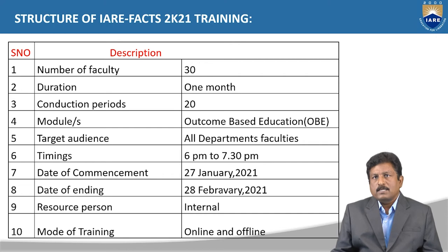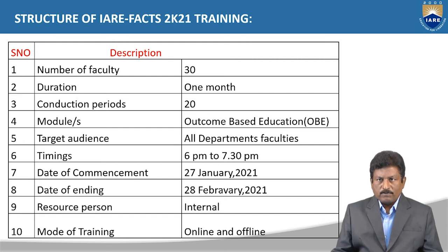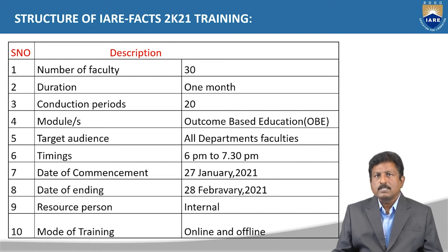Coming to the structure of the training program, there are 10 factors to consider. The total number of faculty available in the program is 30. The total duration is one month, with 20 periods of conduction. The first module is the Outcome-Based Education system, targeting all department faculties. Timings are every day from 6 p.m. to 7:30 p.m. Date of commencement is 27th January 2021 and date of ending is 28th February 2021. The resource person will be internal, and the mode of delivery will be online as well as offline.